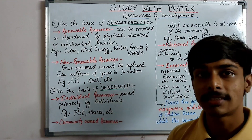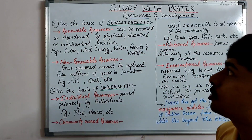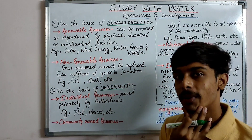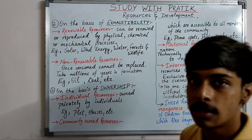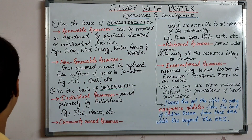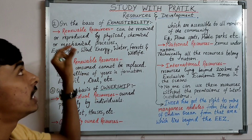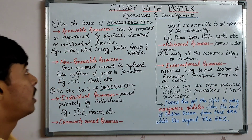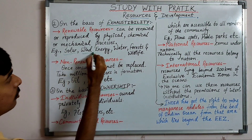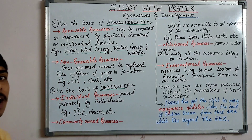Renewable resources — 'navikaraniya sansajan' — can be renewed and reproduced by physical, chemical, or mechanical processes. Resources which can be renewed through these processes are called renewable resources. Examples include solar energy, wind energy, water, forest, and wildlife.